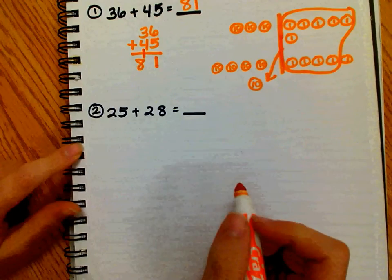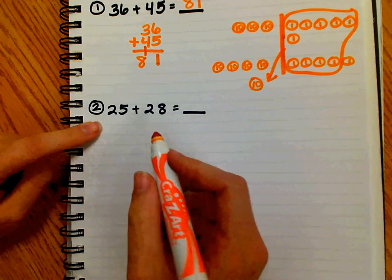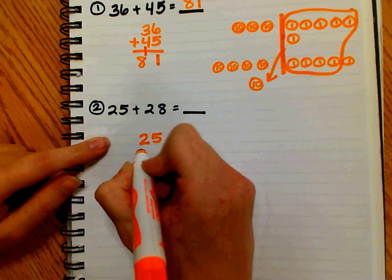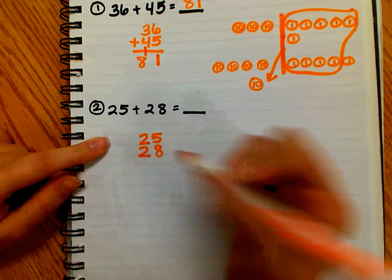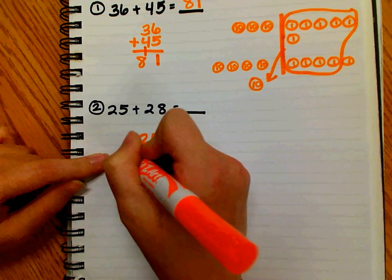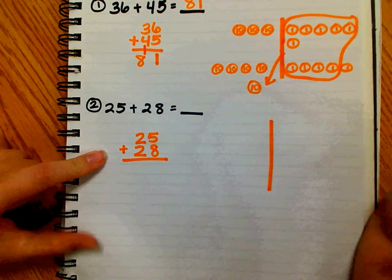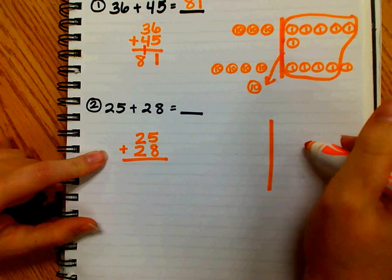Let's use another example: twenty-five plus twenty-eight. First, I stack the numbers vertically so that the ones place and the tens place are lined up. And I model with my place value chart, separating the tens and ones columns.